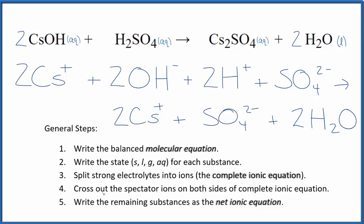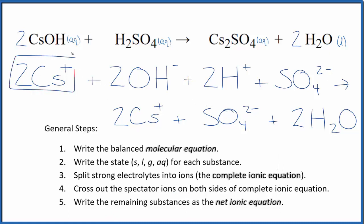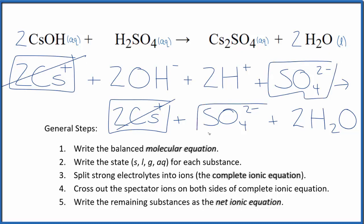Now we can cross out the spectator ions — they're on both sides of our equation. In the reactants I can see two cesium ions, and in the products as well, so these are spectator ions — let's cross those out. Here's a sulfate ion in the reactants and in the products — spectator ion, cross it out.